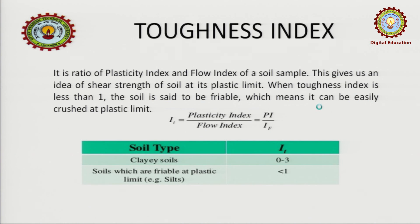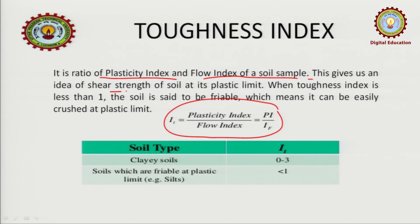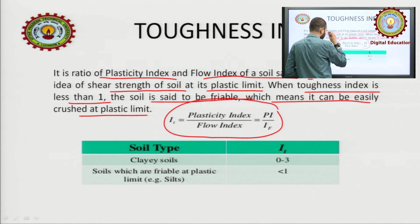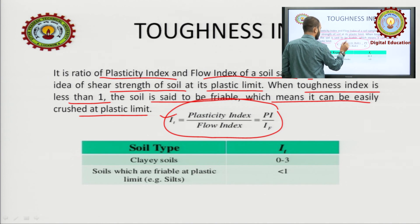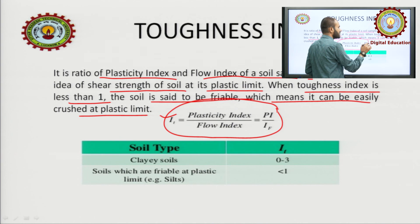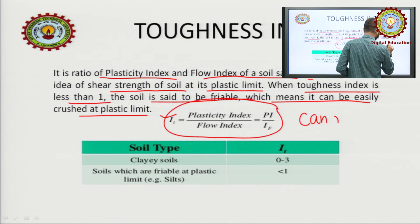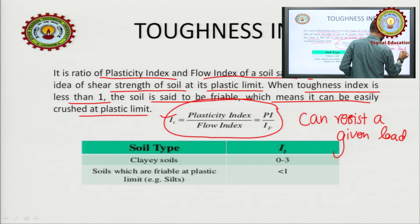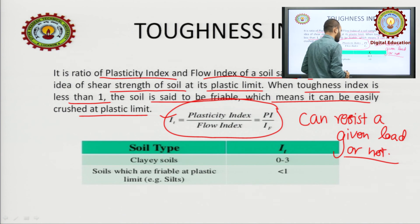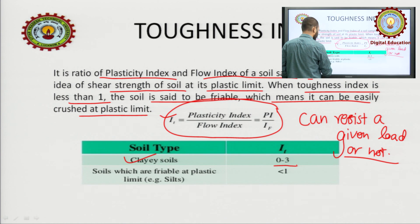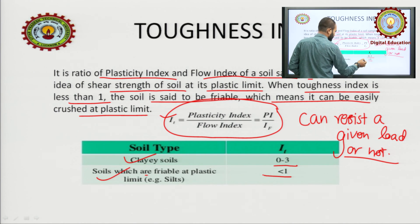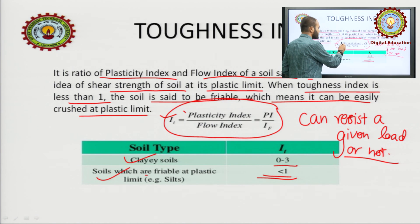Toughness index is the ratio of plasticity index to flow index of the soil. This gives us an idea of shear strength at the plastic limit. When toughness index is less than 1, the soil is said to be friable — meaning it can be easily crushed at plastic limit, even by hand. The toughness index is a very good parameter to check whether the soil can resist a given load. Generally for clayey soil the value is 0 to 3, and for soils that are friable at plastic limit, it will be less than 1.